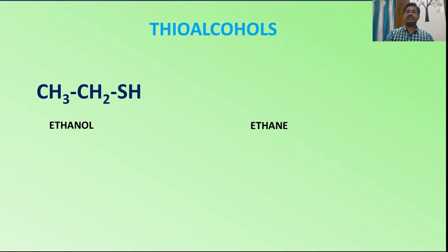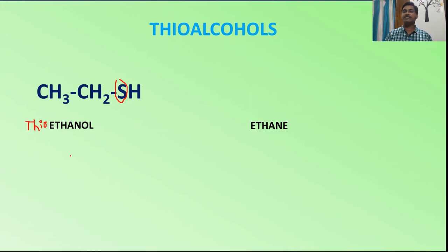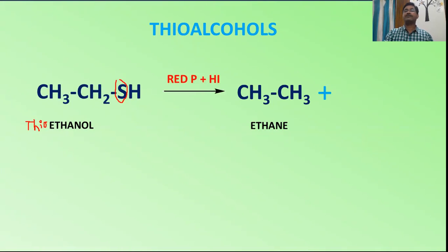Now let us take thioalcohols. 'Thio' means oxygen is replaced by sulfur in any compound — when oxygen is replaced by sulfur, we use the term 'thio.' This is called thioalcohol. When thioethanol is treated with our reagent, it converts into ethane, and the SH group converts into H₂S. Two hydrogens are required — one for CH₂ and one for the SH group.